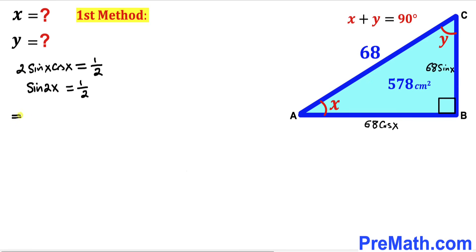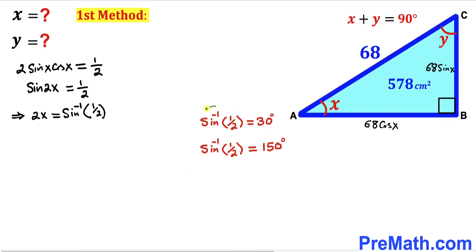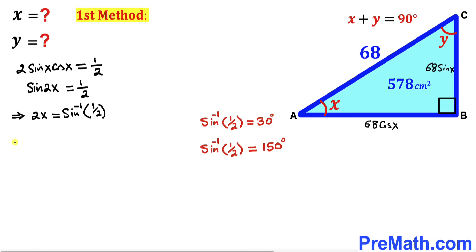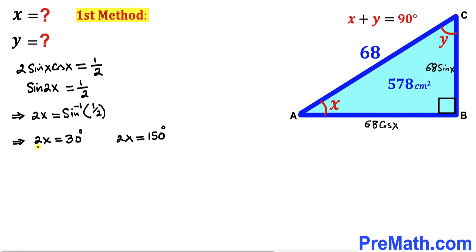Therefore we can write 2x equals sine inverse of one-half. We know that sine inverse of one-half is either 30 degrees or 150 degrees. So either 2x equals 30 degrees or 2x equals 150 degrees. Dividing both by 2, our x value is either 15 degrees or 75 degrees.